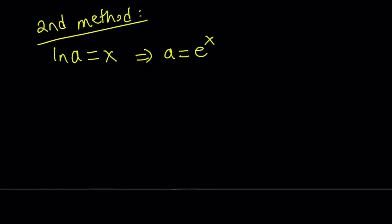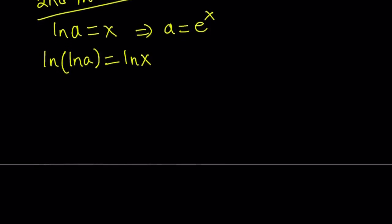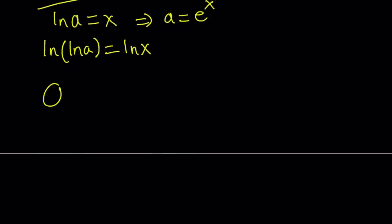I use the definition here, and now if we ln both sides, we get ln of ln a equals ln x. So let's go ahead and substitute these into our expression. We have a to the power ln ln a over ln a, and notice that ln ln a is equal to ln x, so we can write this as a to the power ln x over x.